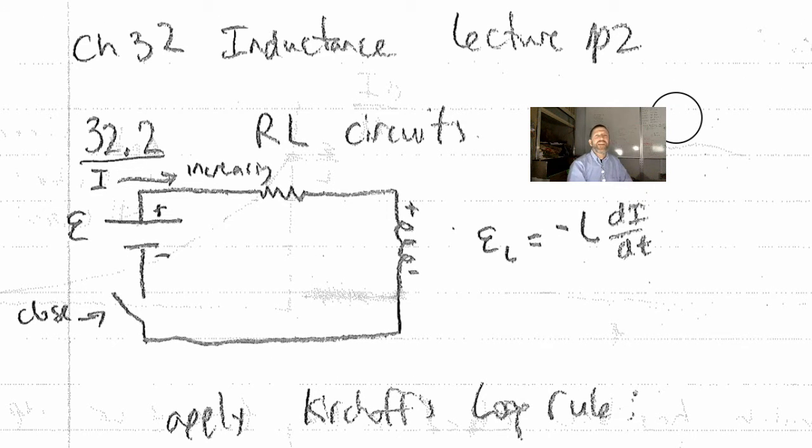What we're now going to introduce is RL circuits. We've seen RC circuits. Now we get an RL circuit, which has a source EMF very often. Once you get the current going, you can take out the EMF, the source EMF. But this has a resistor and an inductor in it.